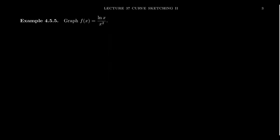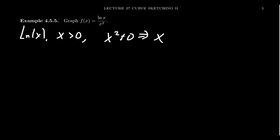As the next example, take the function f(x) = ln(x) / x². In terms of the domain, what issues do we have to worry about? When it comes to the natural log of x, the input x has to be greater than zero. And in the denominator, we can't have x² = 0, which implies x = 0. But since the natural log already requires x > 0, our domain is going to be (0, ∞).